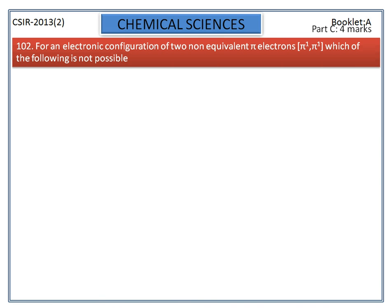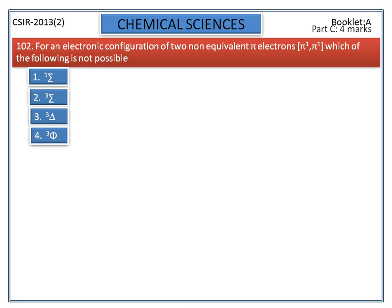For an electronic configuration of two non-equivalent pi electrons, π1, π1, which of the following is not possible? The options are shown here.